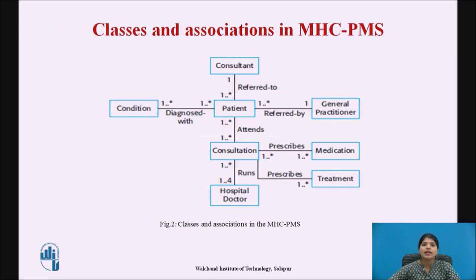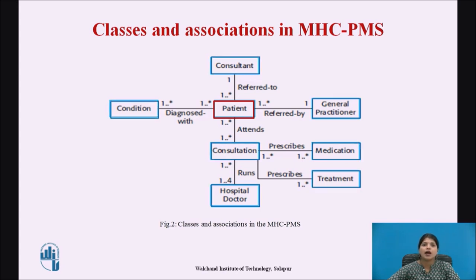In classes and associations in MHC PMS, patient is the class and its objects are involved in relationships with a number of other classes, indicated by blue rectangles. The UML also allows the role of objects participating in the association to be specified. At this level of detail they look like semantic data models used in database design, showing data entities, their associated attributes, and the relations between these entities.